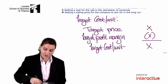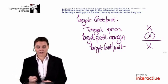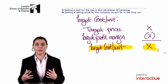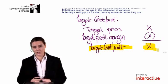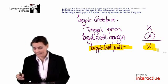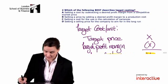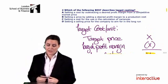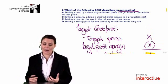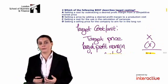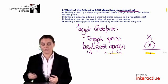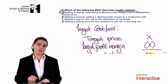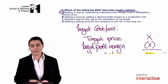We then need to look at our activities in our factory environment to ensure that our cost per unit is at this target level. So which of the following statements best describes target costing? Option A: setting a cost by subtracting a desired profit margin from a competitive market price. That is exactly what we have just done, so the correct answer is A.